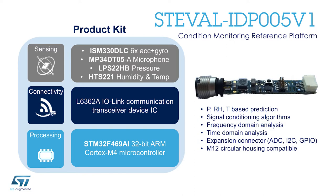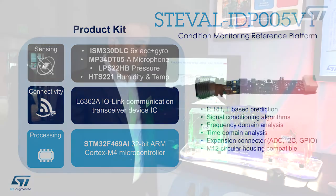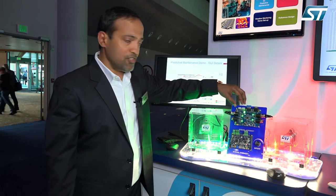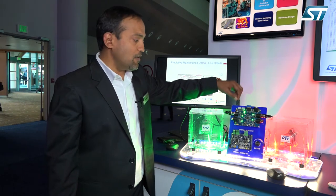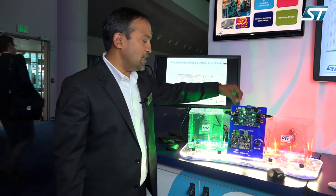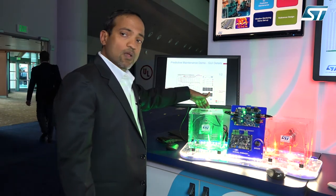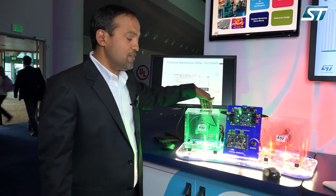The IO-Link interface takes care of taking the data from the board to the central board. This IO-Link master board in turn then takes the data and passes it to the PC via USB interface.